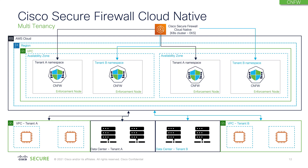Another important use case is multi-tenancy. We have seen a lot of customers asking for this particular feature. What I'm showing here is we have an SFCN cluster. In that SFCN cluster, I have two tenants — tenant A and tenant B. We do this using namespaces, but there are other things in the background that will happen, like security groups and route tables, that will segregate your traffic between tenant A and tenant B. A single cluster can host multiple tenants, and then you can create a backhaul going back to those customers.